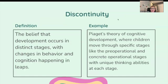Discontinuity is the belief that development occurs in distinct stages, with changes in behavior and cognition happening in leaps. For example, Piaget's theory of cognitive development, where children move through specific stages like the pre-operational and concrete operational stages, each with their own unique thinking abilities.